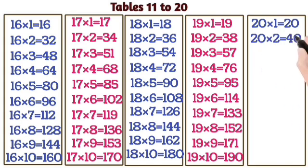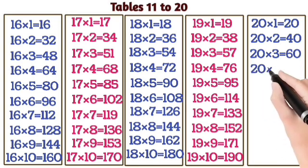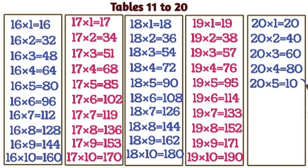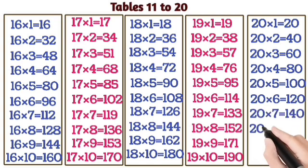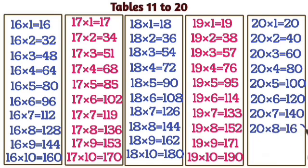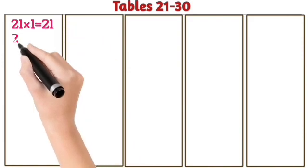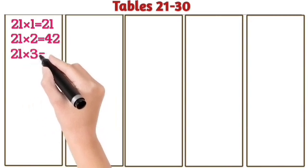20 ones are 20. 20 twos are 40. 23s are 60. 24s are 80. 25s are 100. 26s are 120. 27s are 140. 28s are 160. 29s are 180. 20 tens are 200.